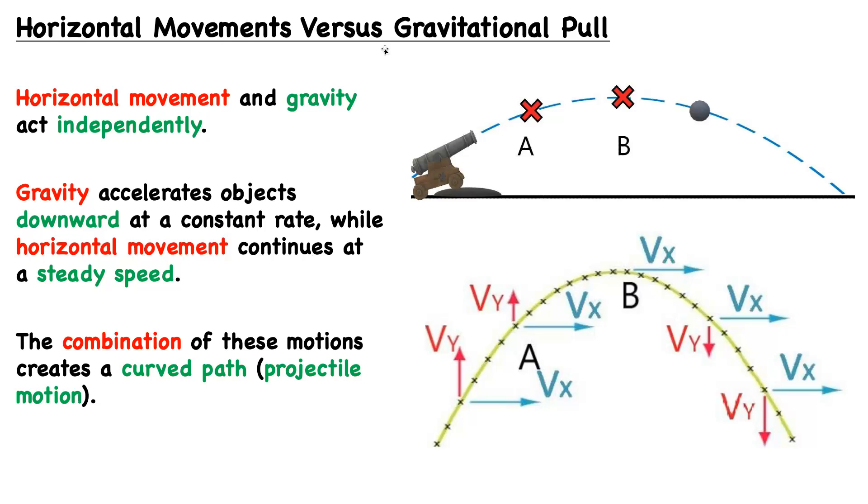Horizontal movement and gravity act independently. Here, in this bottom illustration, we can see how the x and y components of its motion change across its trajectory.